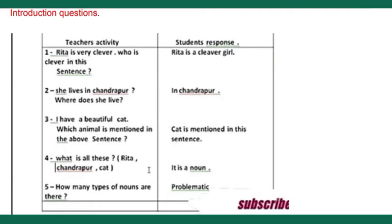For the introduction, we write the question step. First, write the sentence 'Rita is very clever' on the blackboard and ask students: 'Who is clever in this sentence?' Students answer 'Rita.' Then ask: 'She lives in Chandrapur — where does she live?' and 'I have a beautiful cat — which animal is mentioned?' After these answers, ask: 'What are Rita, Chandrapur, and cat? What do we call all these names?' Students will answer: 'It is a noun.'